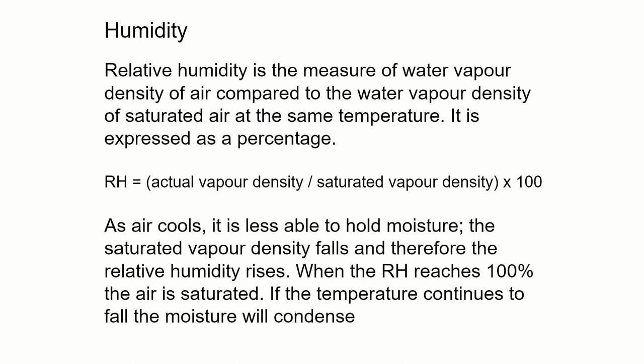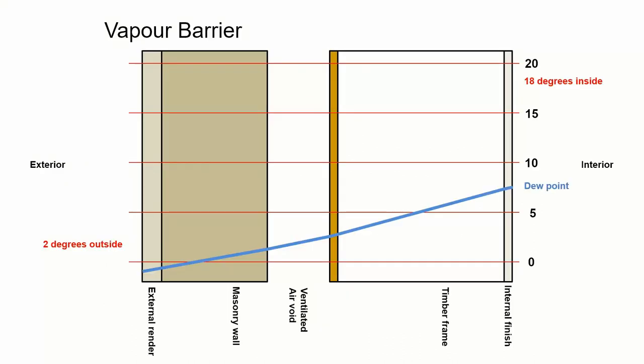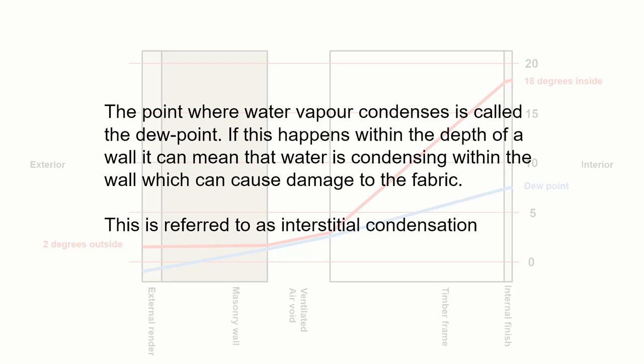If the temperature continues to fall, there's no possibility that moisture can be held within the air, so it will start to condense and form moisture droplets. We refer to this as the dew point—the point where water starts to condense at a given temperature and a given relative humidity.